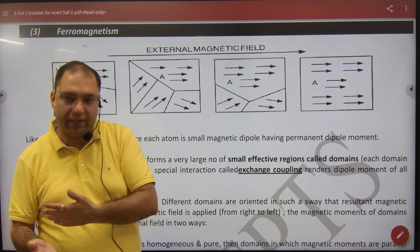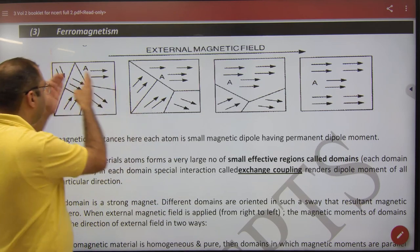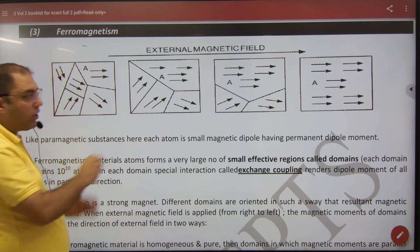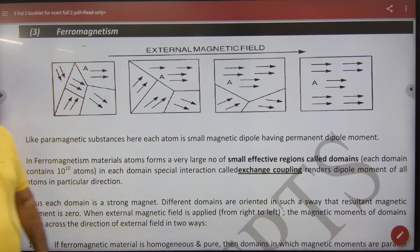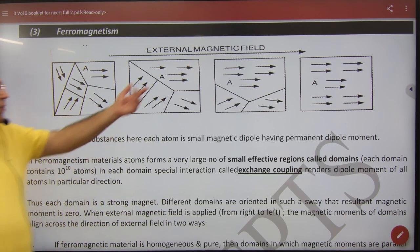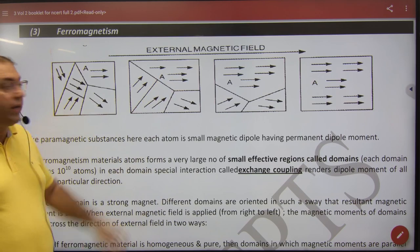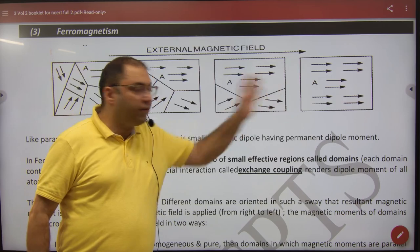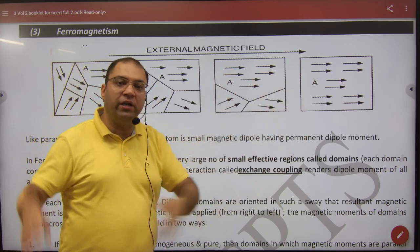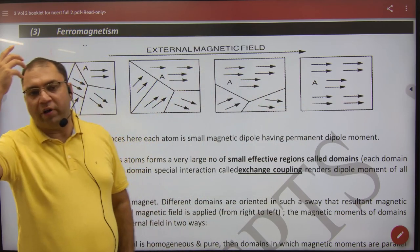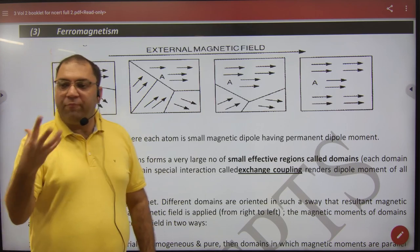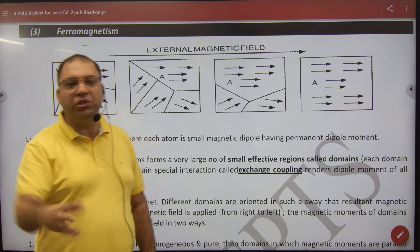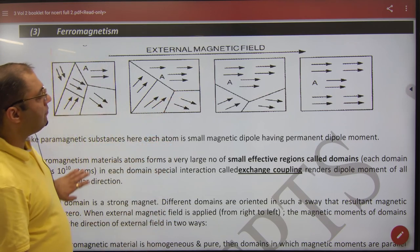But when you magnetize, what happens? This domain expands and also becomes this, so this also becomes a big domain. If you increase the magnetic field, this became a bigger domain. Then with more magnetic field, it expands further, consuming other domains. So this process in which one domain gets the other domain and then another gets absorbed continues.